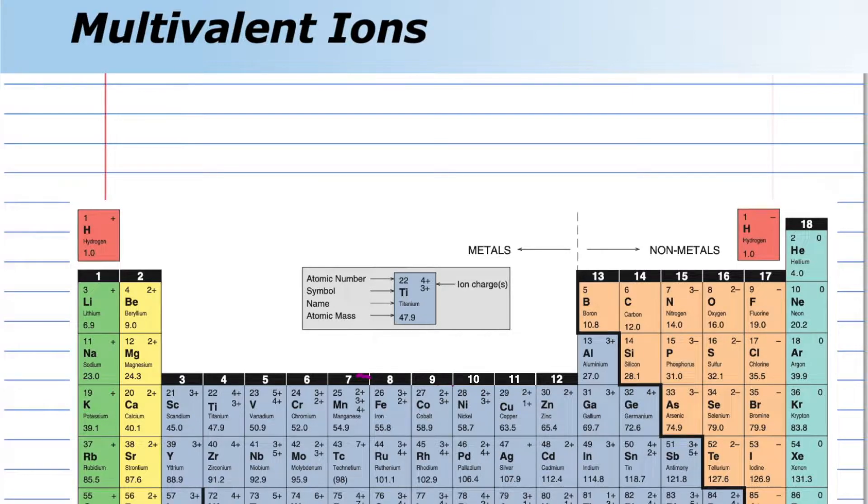Let's see if we can name manganese bromide in words. Manganese is here and bromide comes from bromine. Remember we have a metal and we have a non-metal.